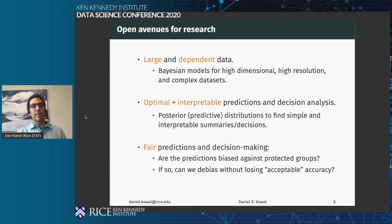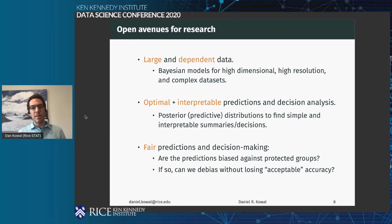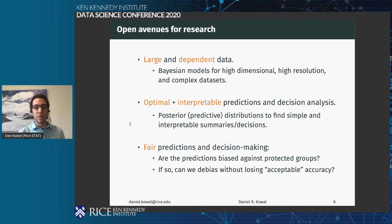To summarize: I'm looking at large dependent data and trying to come up with optimal but also interpretable predictions and decision analyses. The last piece I'm interested in moving into more is taking these predictions and decision making and thinking about fairness — are we biasing against protected groups? Can we de-bias without losing the notion of acceptable accuracy? Thank you.